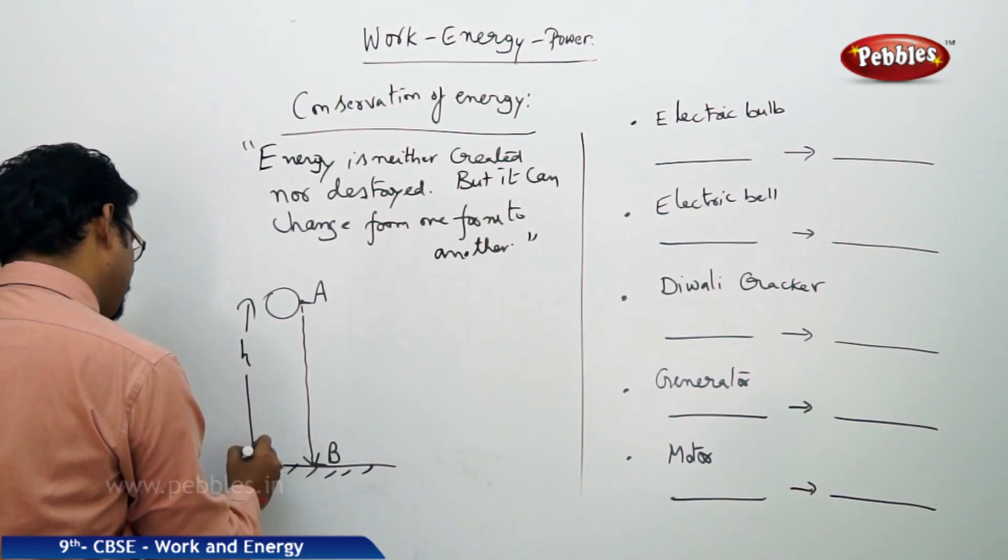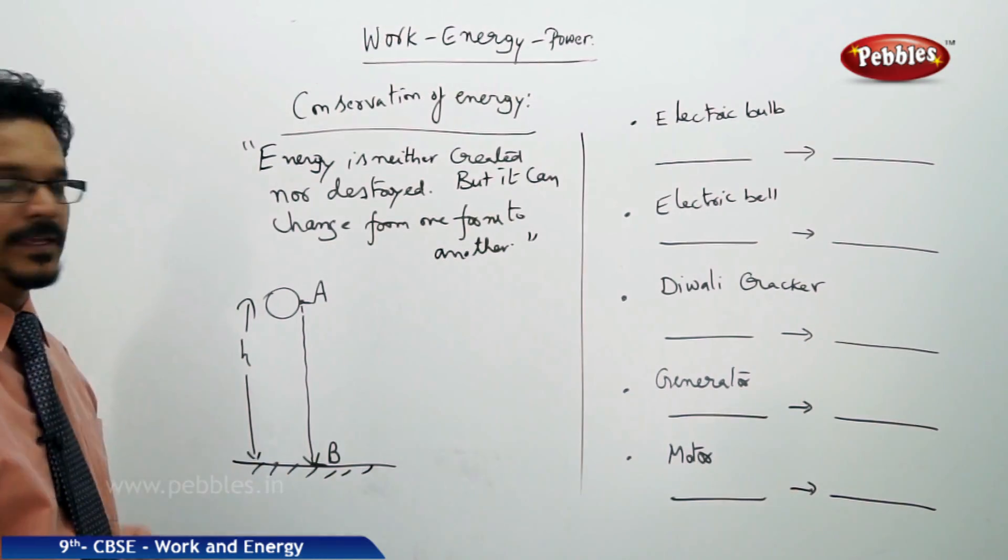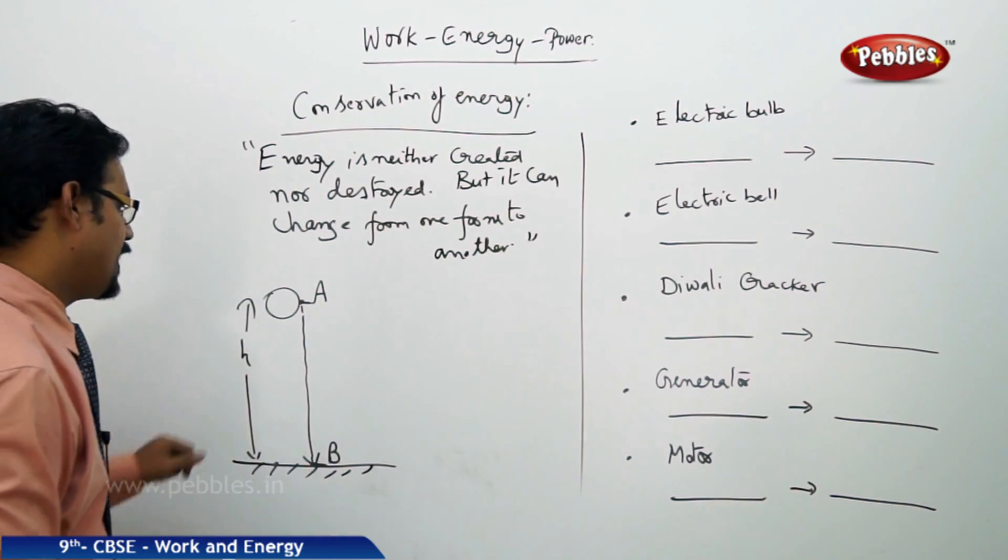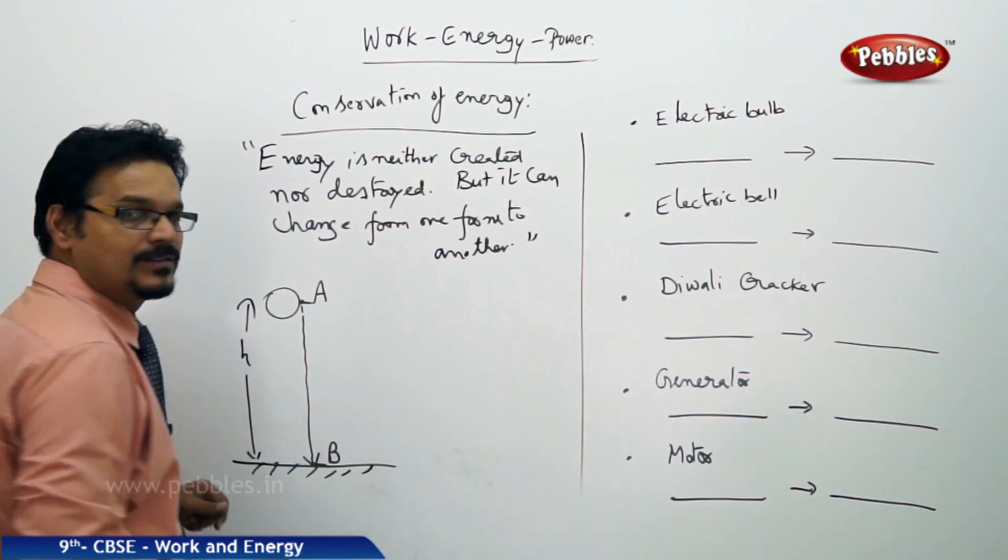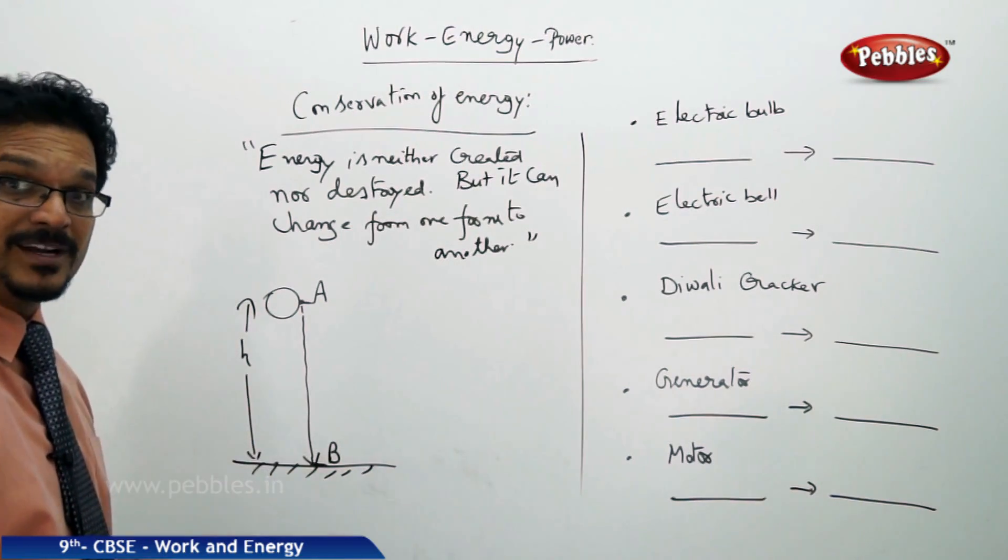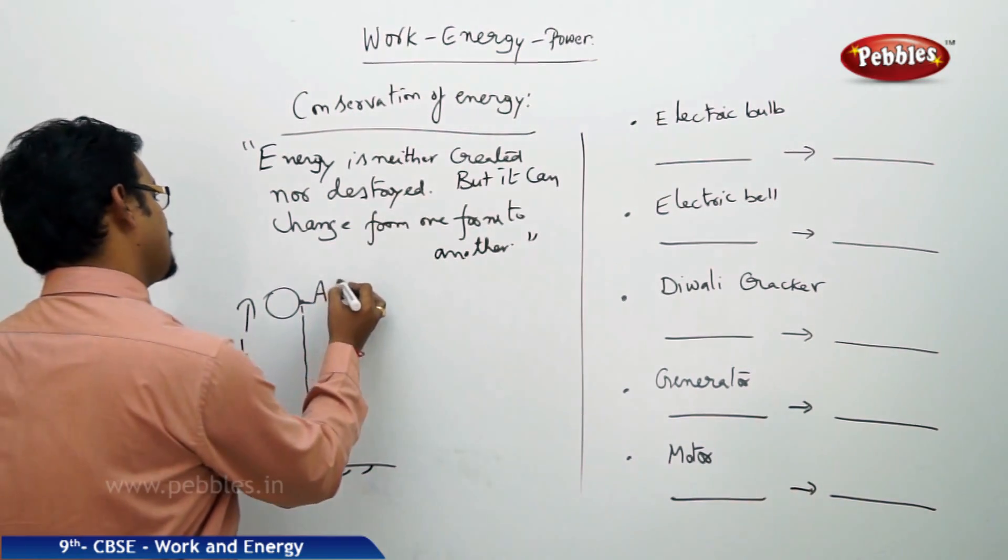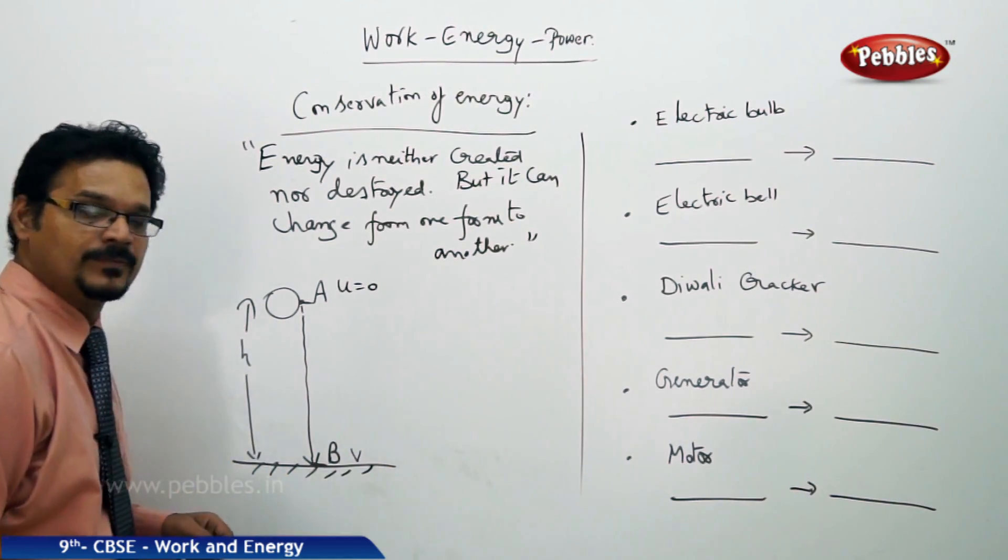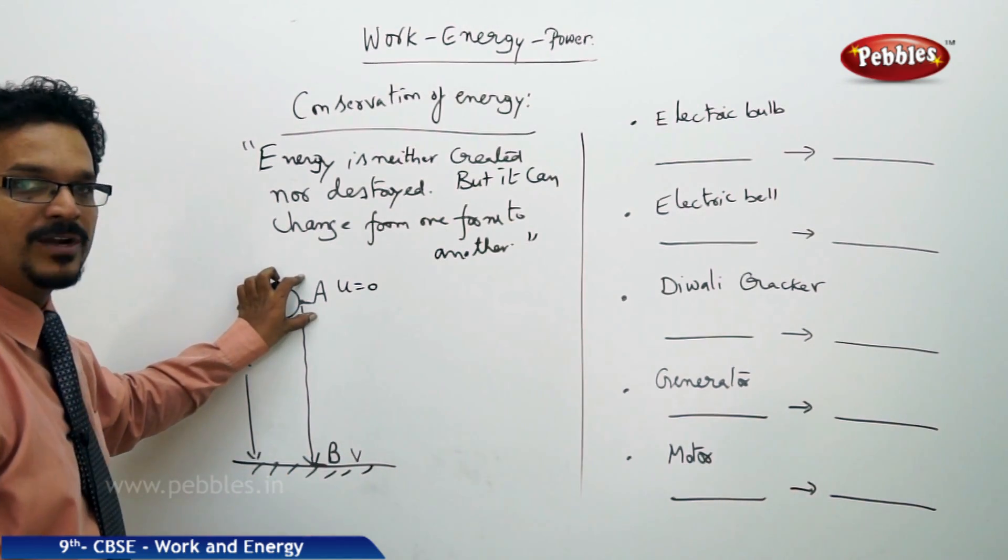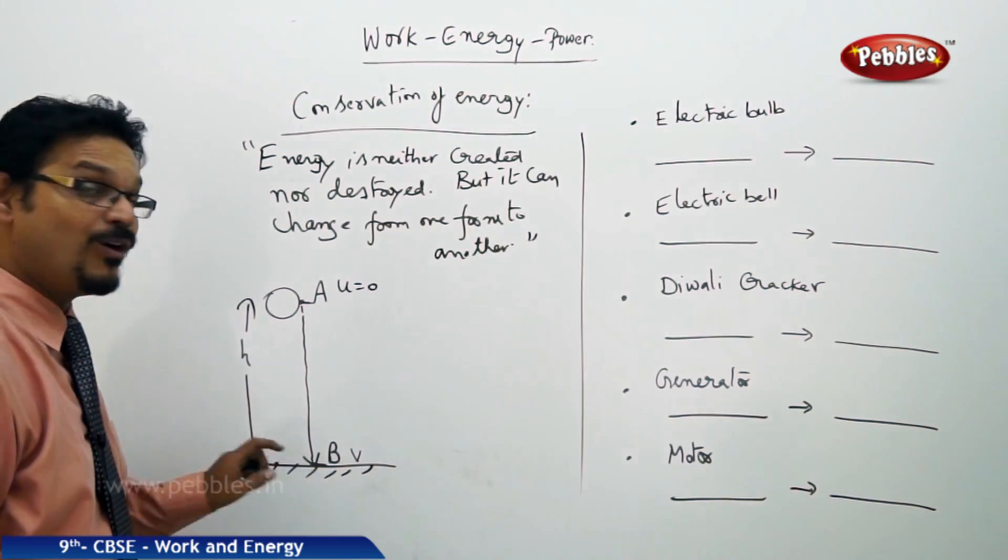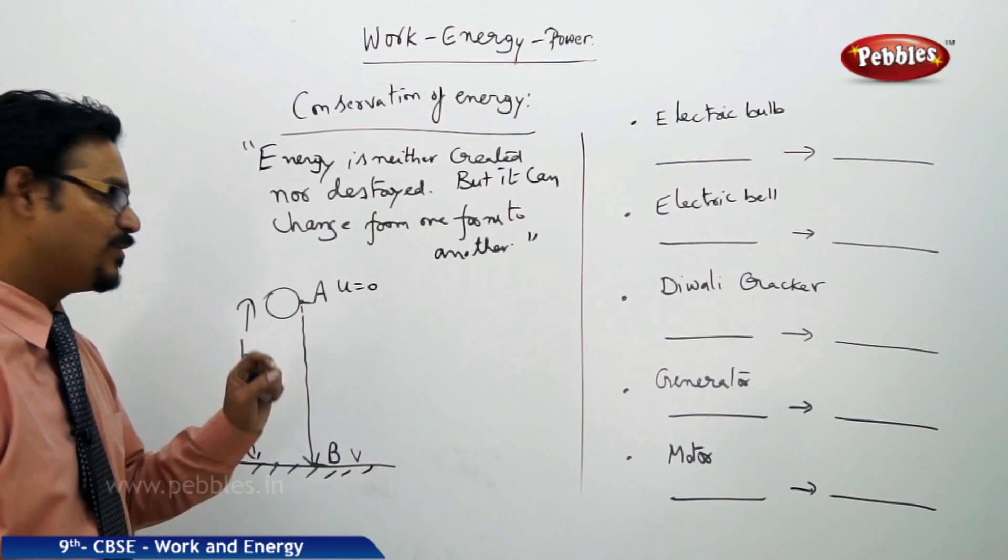Let me explain the statement using an example. Here a ball is at a height H at point A, and this is point B. So at point A, suppose we can say it's a freely falling body. When it's a freely falling body, initial velocity U equals 0, final velocity V is maximum.